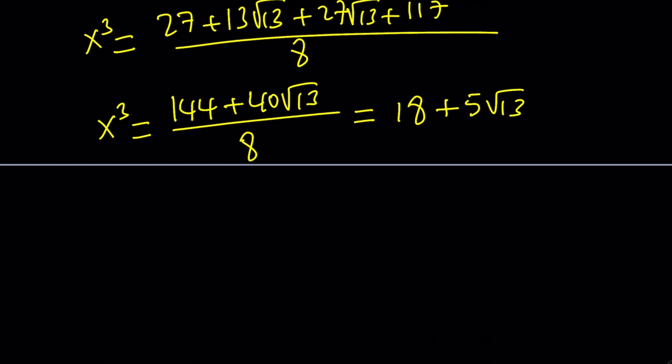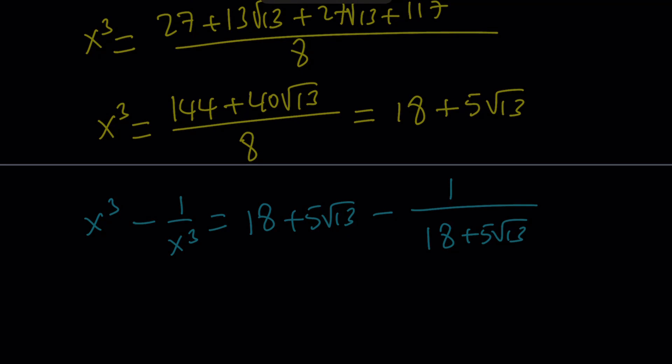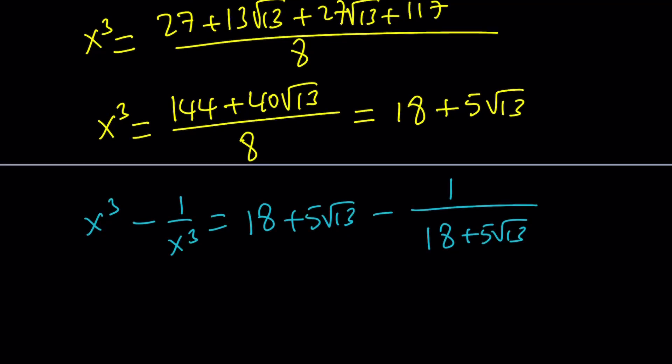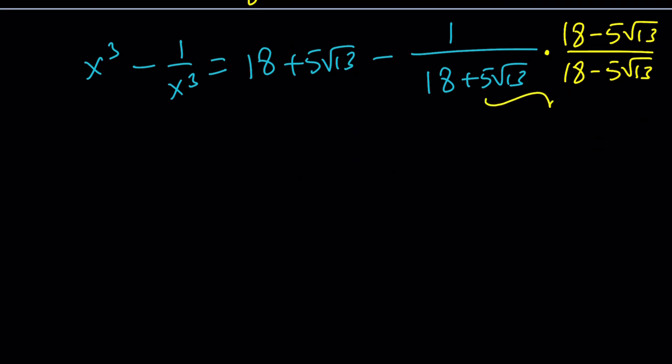Since we got x cubed, we can plug it in. Our goal is to find x cubed minus 1 over x cubed. So that's going to be 18 plus 5 root 13 minus 1 over 18 plus 5 root 13. And what you should be doing here is rationalizing the denominator. So multiply by the conjugate, and divide by that. In other words, multiply by 1. But this is going to rationalize the denominator.